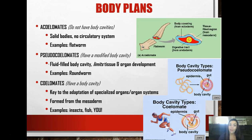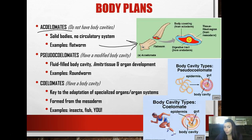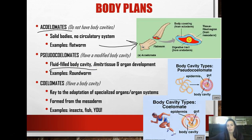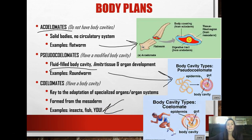Let's talk about body cavities. There are three kinds: acoelomates, pseudocoelomates, and coelomates. Acoelomates don't have a body cavity - they're just a solid body without a circulatory system, like the flatworm. A pseudocoelomate has a modified body cavity - it's fluid filled but limits tissue and organ development. An example is the roundworm. A coelomate, which we are, is the key to having specialized organs and organ systems, and is formed from the mesoderm. Examples include you, fish, and insects.